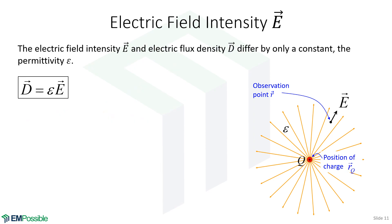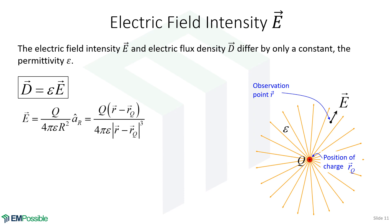Now the electric field intensity E. Remember, it is the electric flux density that is most closely associated with electric charge. Therefore, that should be calculated first. If the question asks for the electric field intensity, by all means calculate the electric flux density first. Then use the constitutive relation to calculate the electric field intensity — that is the electric flux divided by the permittivity of the system.